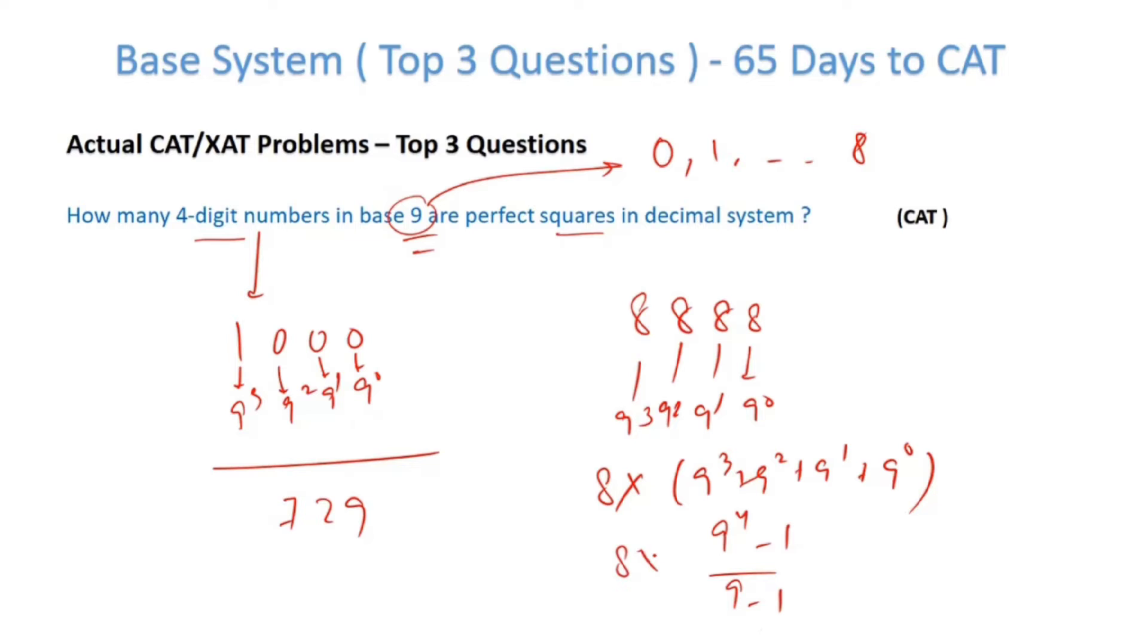So 9⁴ - 1. What is 9⁴? 81×81 = 6561 - 1 = 6560.